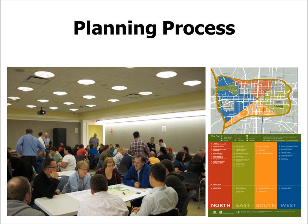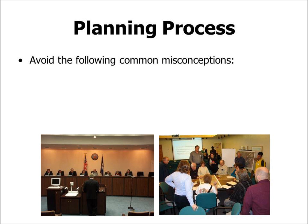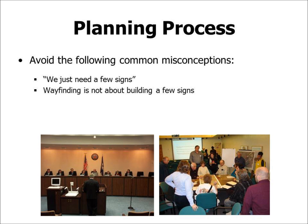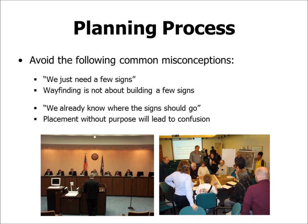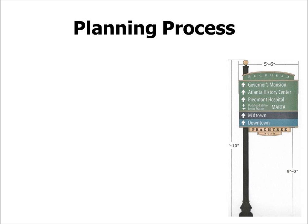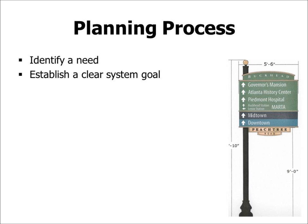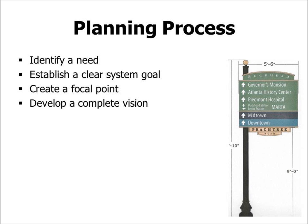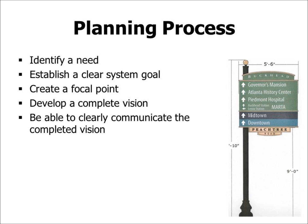It is important when considering implementing a wayfinding system to avoid common misconceptions. First, many people think 'we just need a few signs' — wayfinding is not about building a few signs. Second, many people think 'we already know where the signs should go' — placement without purpose will lead to confusion. The wayfinding planning process includes: identify a need, establish a clear system goal, create a focal point for the system, develop a complete vision, and clearly communicate the completed vision to visitors. Remember, it's an entire system — not just one sign at one location.